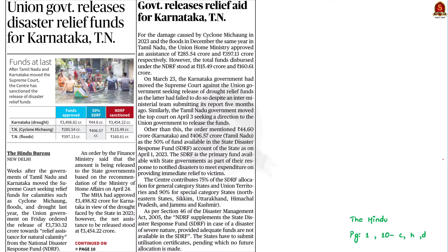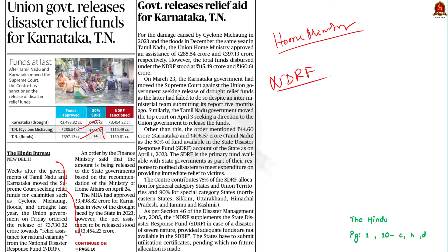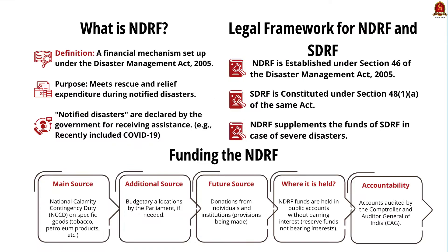The Union Home Ministry provided aid for cyclone-affected damage caused by cyclone Michong and Tamil Nadu floods in 2023 — 285.54 crores for Michong and 397.13 crores for the floods — released under the National Disaster Response Fund. In this context, let us revise what is the National Disaster Response Fund, its statutory provisions, sources of financing, and how funds are used. The National Disaster Response Fund is a financial mechanism set up at the national level under the Disaster Management Act 2005, to meet rescue and relief expenditure during any notified disaster.